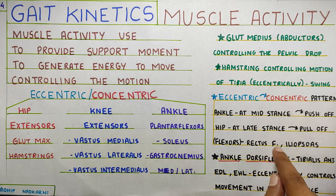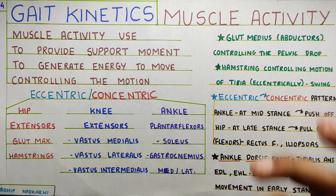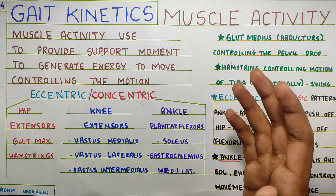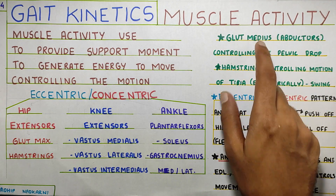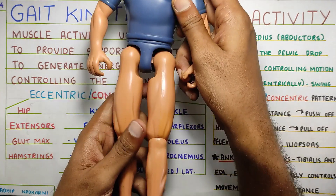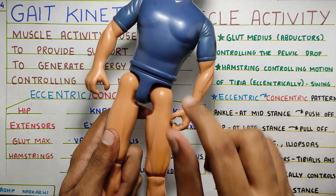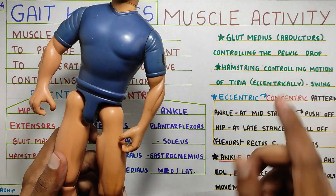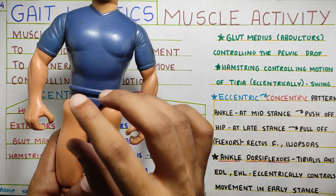The rectus femoris activity can be easily noticed, but iliopsoas is hard to measure because the muscle is very deep, so EMG studies are quite difficult. Another thing that happens at the hip is the glute medius — the abductors — which we spoke about in the determinants of gait. The abductors like glute medius will be working at the hip joint to control pelvic drop. While walking, there will be pelvic drop on either side, which will be controlled by your hip abductors in a more controlled fashion.